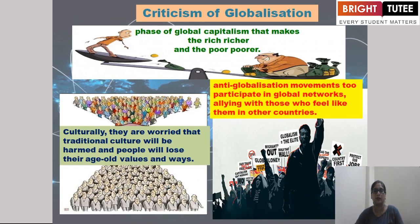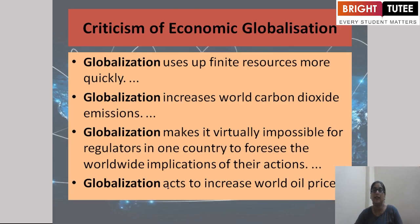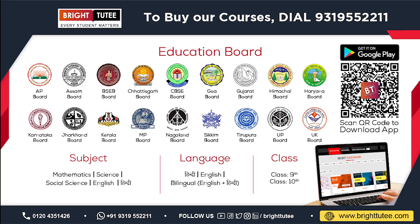There is criticism of globalization as well, since every thing has positive and negative effects. There are phases of global capitalism that make the rich richer and the poor poorer. Culturally, people worry that traditional culture will be harmed and people will lose their age-old values. Anti-globalization movements participate in global networks aligned with those who feel marginalized. Globalization uses finite resources more quickly, increases world carbon dioxide emissions, makes it virtually impossible for regulators in one country to foresee the worldwide implications of their actions, and acts to increase world oil prices and speed up infrastructure depletion.